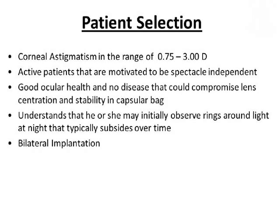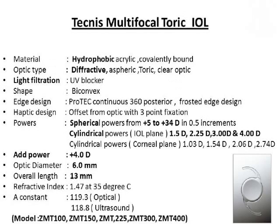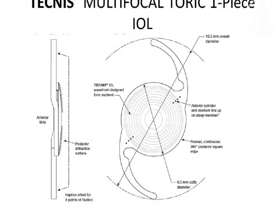Coming to individual IOLs: the Tecnis multifocal toric IOL is a hydrophobic diffractive IOL. It is available in spherical powers from +5 to +34 diopters in increments of 0.5 diopters, and cylindrical powers from 1.5 to 4 diopters. It has an add power for near of +4 diopters. It is available in a 6mm optic diameter and 13mm overall lens diameter, with a diffractive surface on the posterior surface of the intraocular lens.